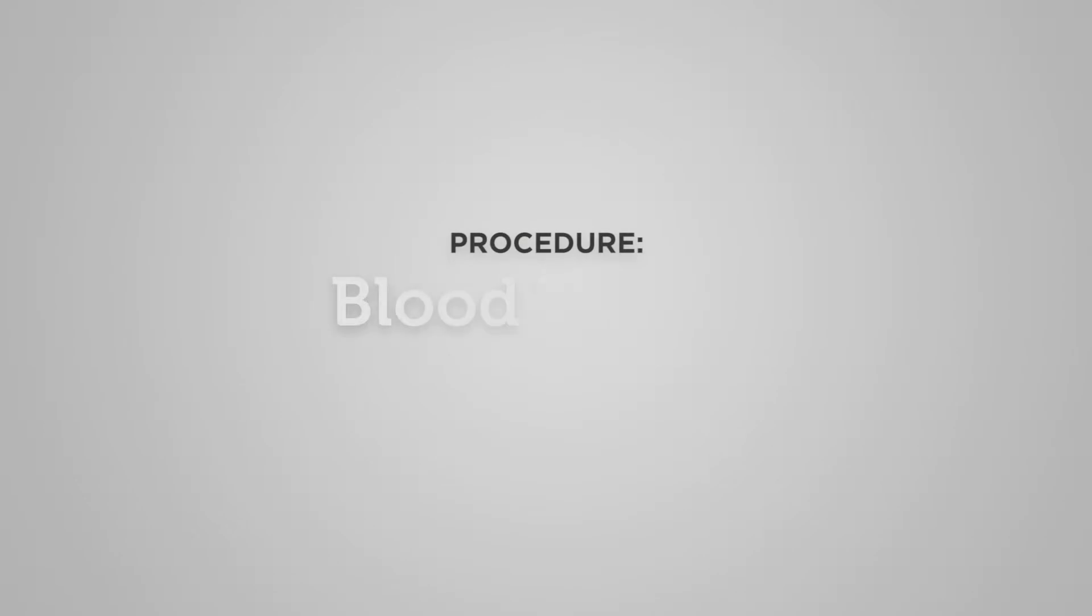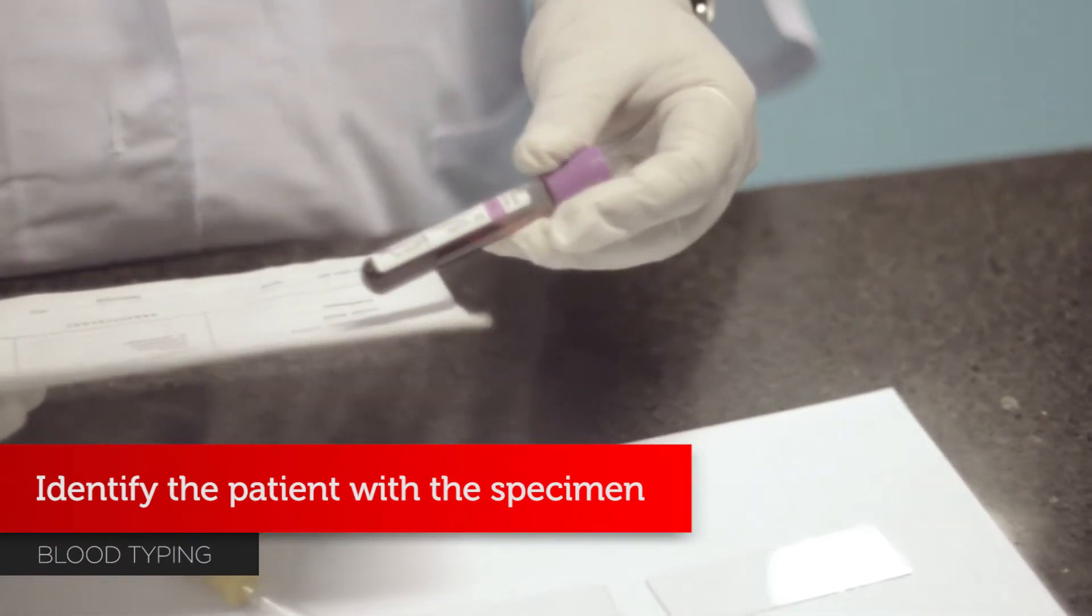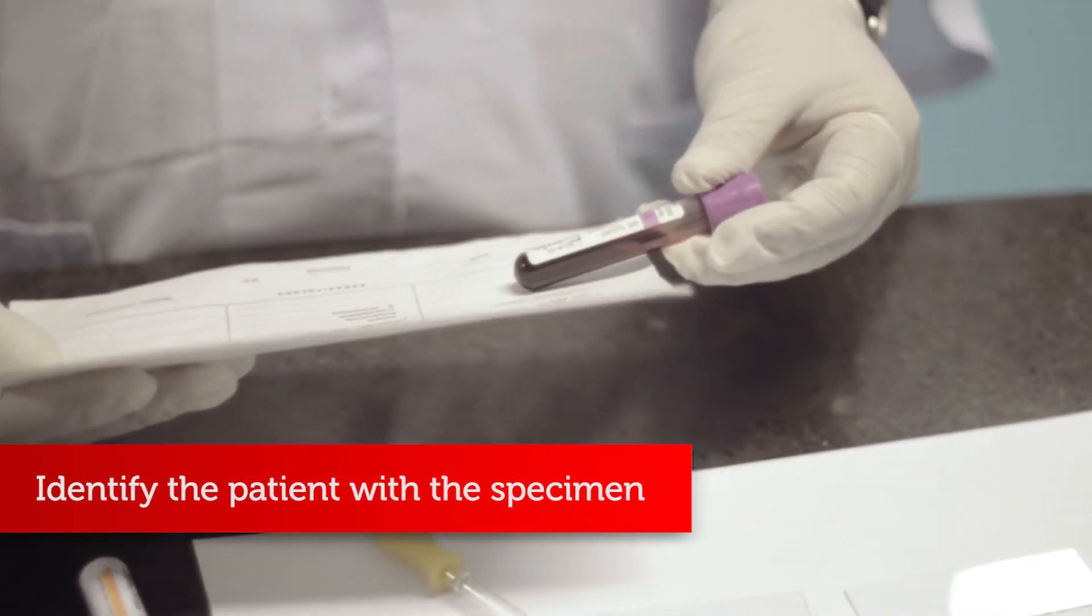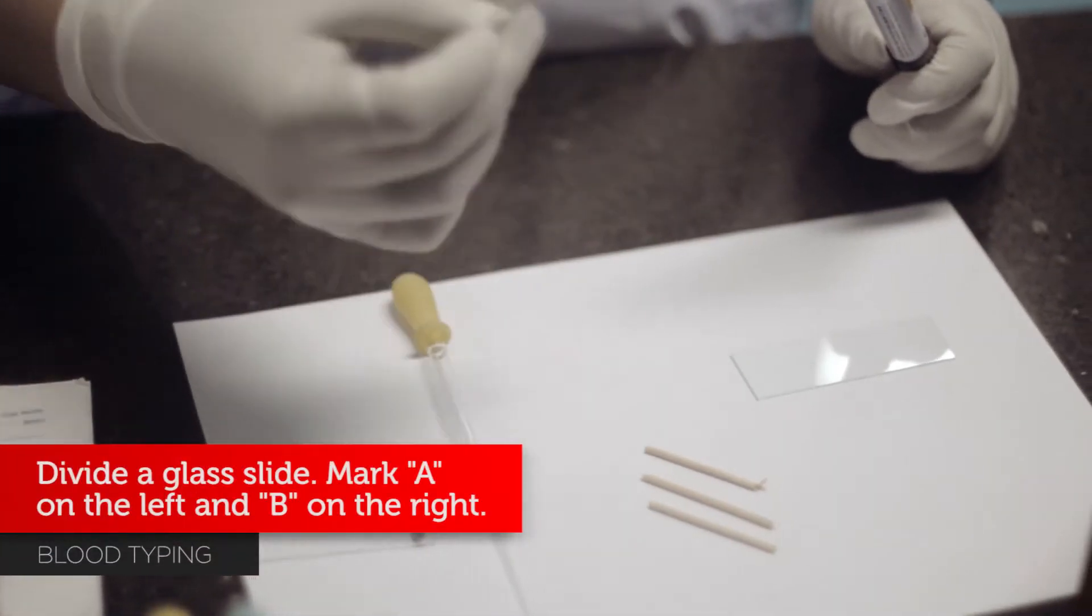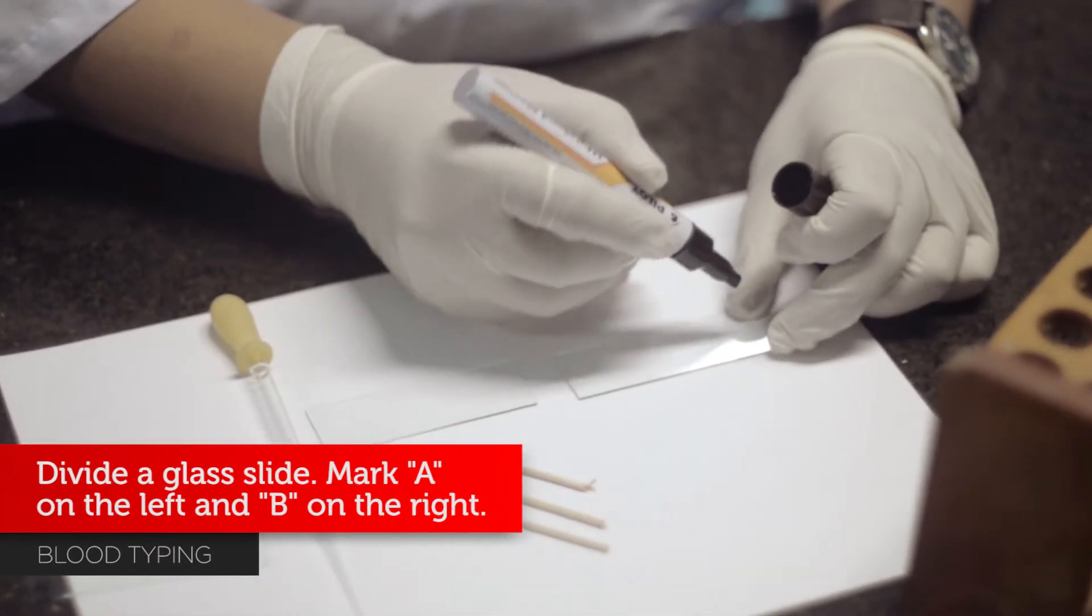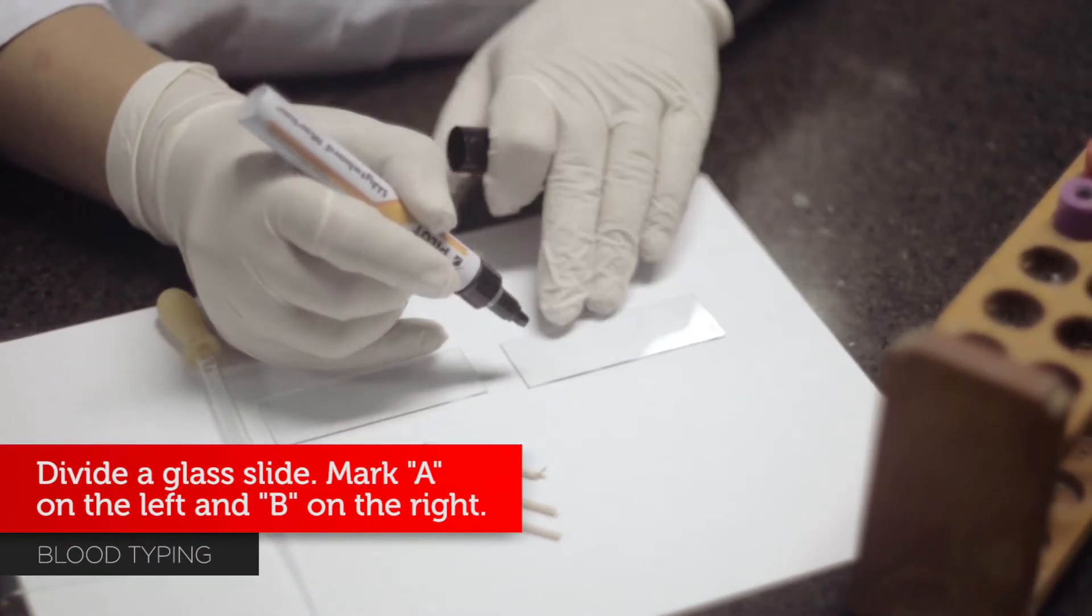Procedures for blood typing: Identify the patient with the specimen. Divide a glass slide by marking through the center. Mark A on the left and B on the right.